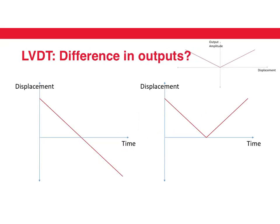Now if we have an output amplitude that is always positive, whether the displacement is positive or negative, how are we going to differentiate between these two different displacement profiles? Both displacement profiles would give you the same output amplitude. This needs some kind of detection mechanism that uses more than just the output amplitude to figure out the displacement — what we need is what is called phase sensitive detection. We will be looking at phase sensitive detection in one of the later lectures.